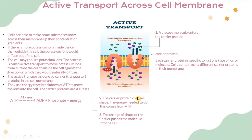Let's look at active transport across the cell membrane. Active transport is whereby cells are able to move some substances across their membrane up their concentration gradient. For example, if there are more potassium ions inside the cell than outside, potassium ions would normally diffuse out of the cell. However, the cell may require potassium ions, so active transport moves potassium ions from outside the cell back inside — against the direction in which they would naturally diffuse. Active transport is carried out by carrier proteins, also called transporter proteins, in the cell membrane, which use energy from adenosine triphosphate to move the ions into the cell. The carrier proteins are ATPases.